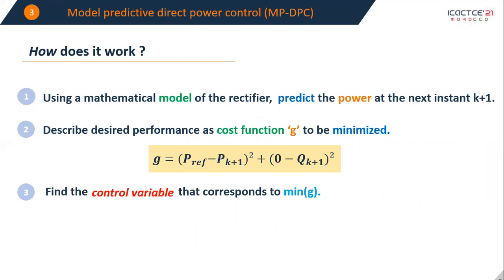Then we must find a control variable that minimizes this cost function. Once we find it, it will help us determine the most suitable switching pattern.